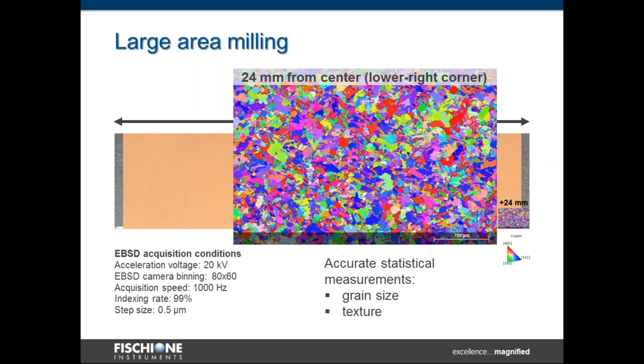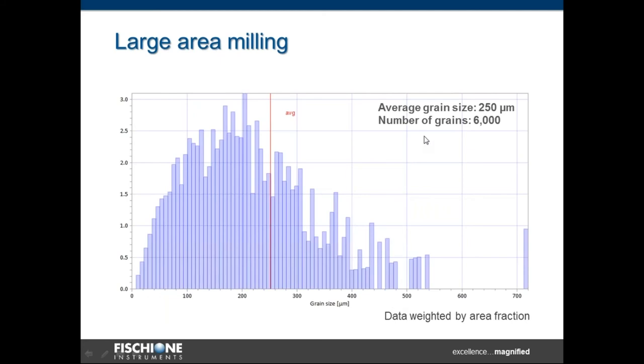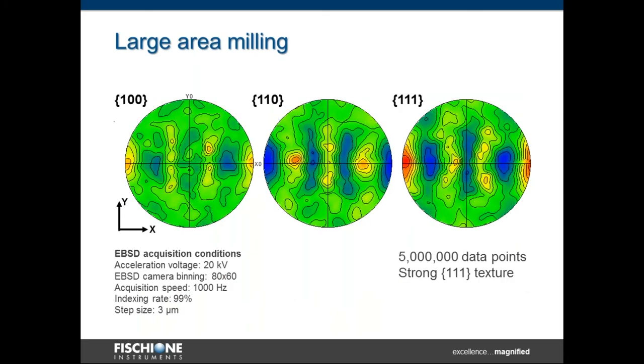The question now is, what you can get from so huge amount of data that will be collected from the huge sample like that, 50 millimeters width. You can improve your statistical measurements like grain size or texture. Here is an example of average grain size that we calculated for our copper bar, which is 250 microns. It was calculated from 6,000 grains. This is only calculated from small fraction of the sample. You can imagine how good statistics you will get being able to mill big sample, such big like 50 millimeters in diameter. Another slide is showing set of pole figure that was plotted from 5 million data points showing very strong texture along 111 direction for our copper bar.